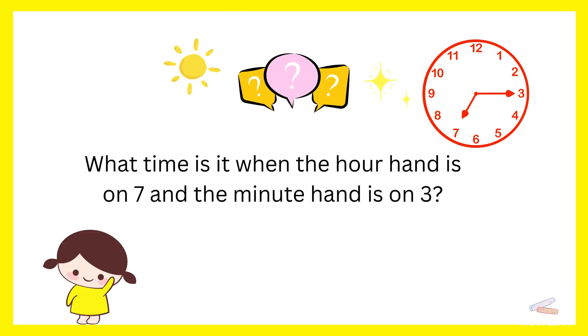What time is it when the hour hand is on 7 and the minute hand is on 3? It's 7 o'clock.